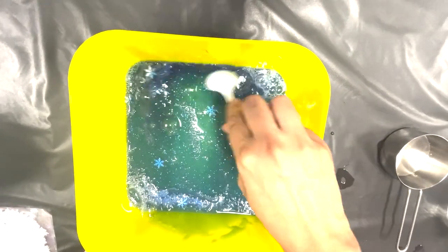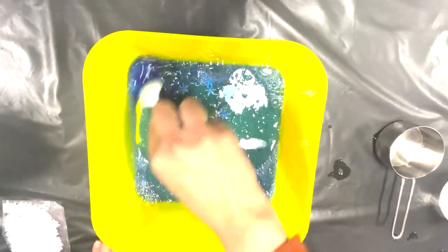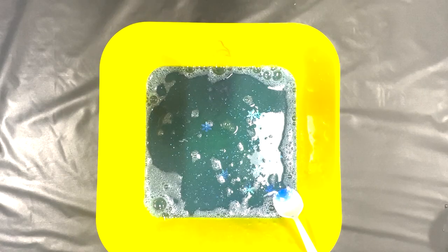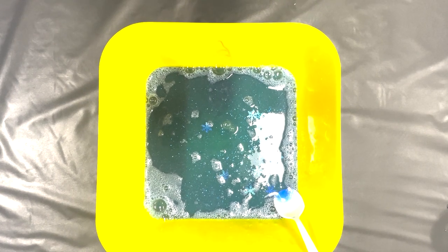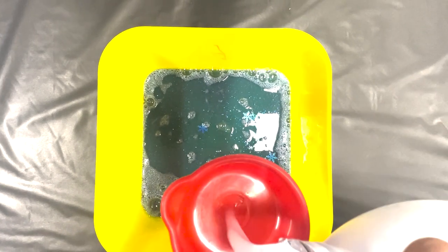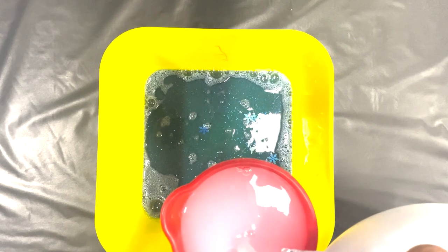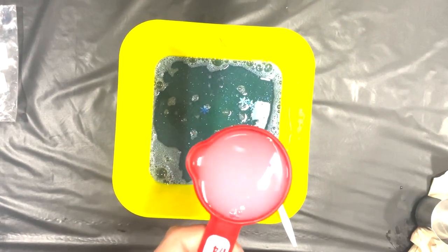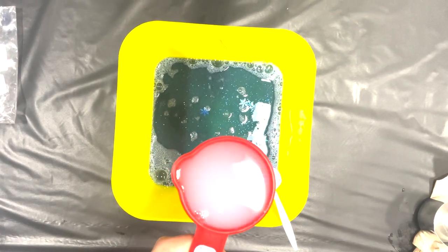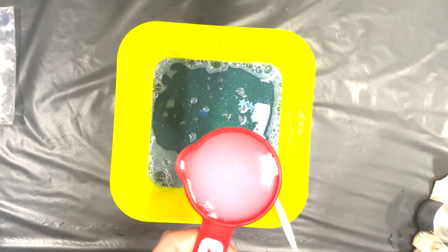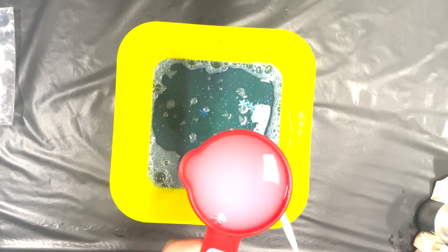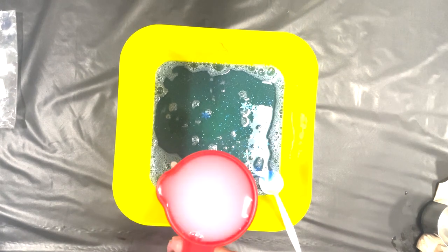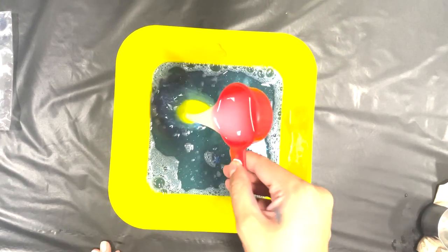Now after we've mixed this all together, next step is adding a quarter cup of liquid starch. Liquid starch is what is going to activate our slime and really get it to the texture and feeling that we want. So we're going to fill in the quarter cup all the way up and then we're going to add in our liquid starch into our mixture.